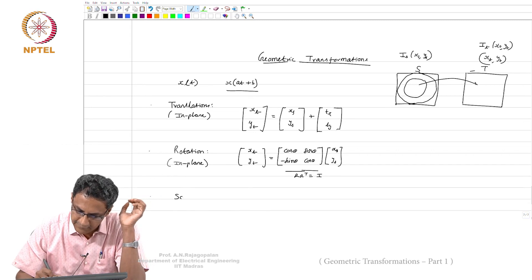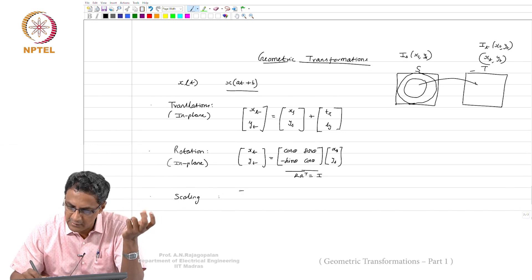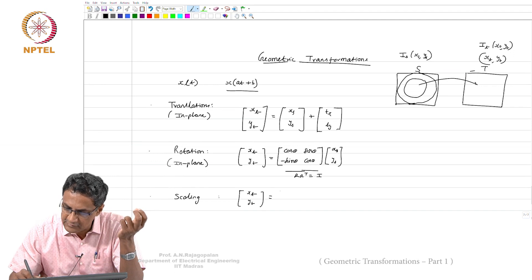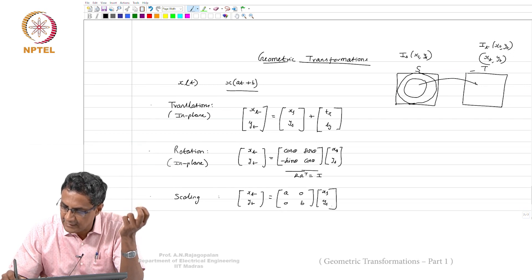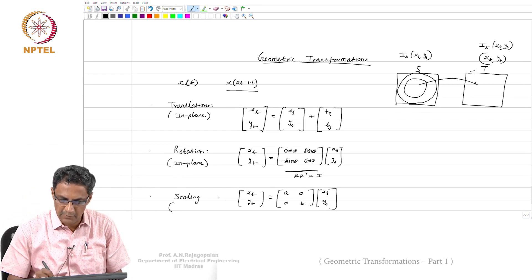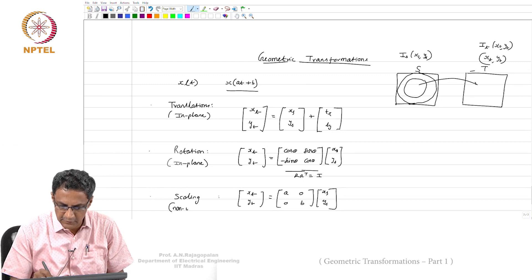Then there is scaling. In general, you can have what is called inhomogeneous scaling or non-uniform scaling, which will look like xt, yt equal to some a, 0, 0, b, times xs, ys. Or in other words, xt equals a xs, yt equals b ys. This is non-uniform because a and b are not the same. But normally when you zoom, these two are identical.